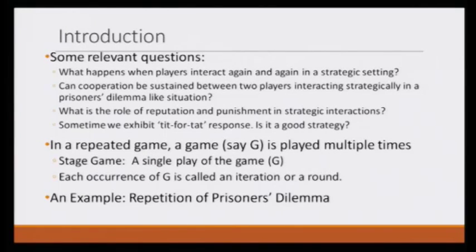Some definitions first that would help us understand. In a repeated game, let us say a game G — G can be anything: it can be the prisoner's dilemma game, it can be the hawk and dove game, it can be the battle of sexes. What happens? Game G gets played multiple times, one after another. Each single play of the game is called a stage game, and each occurrence of G is called an iteration or a round.